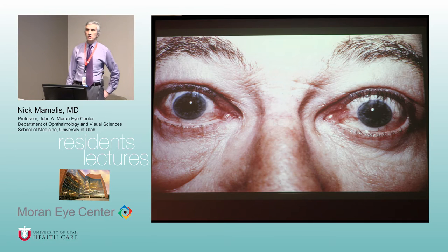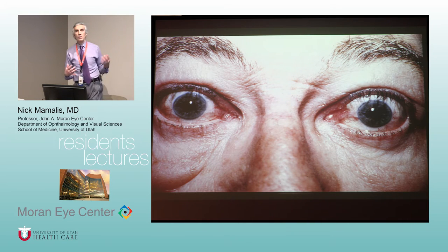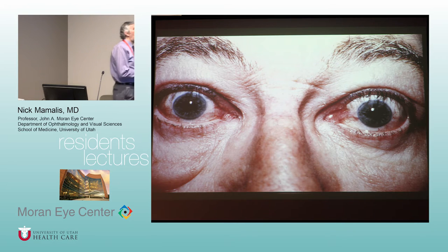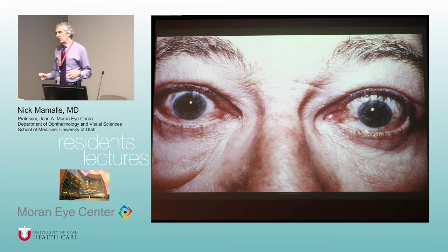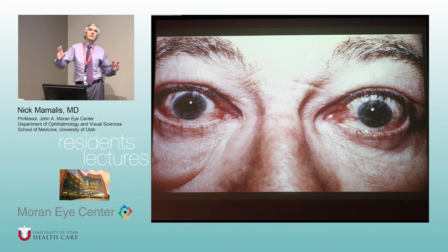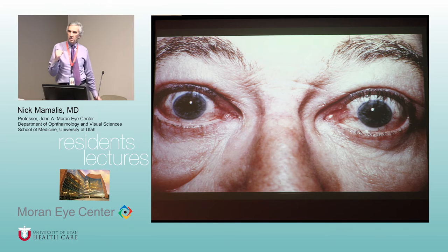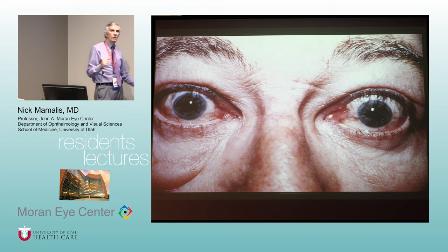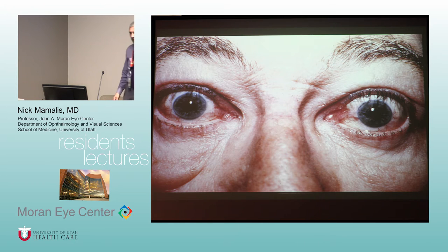Basal cell carcinomas usually don't invade the orbit unless neglected for a very long time, but squamous cell carcinoma can. You can also get distant metastases to the orbit. In women the most common primary is breast; in men it's lung — though that may be changing as women smoke more and lung metastases are creeping up closer to breast in frequency.